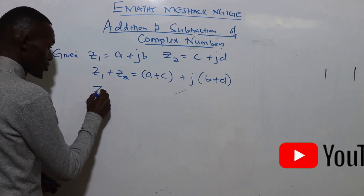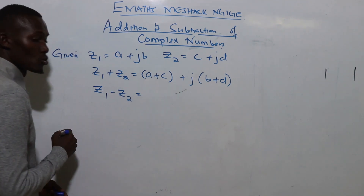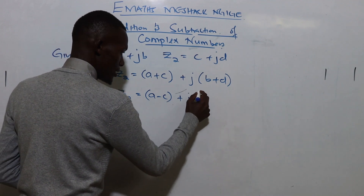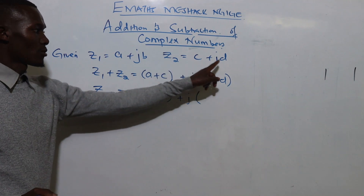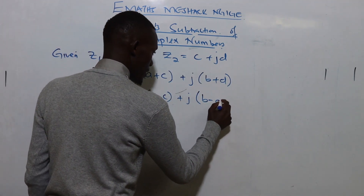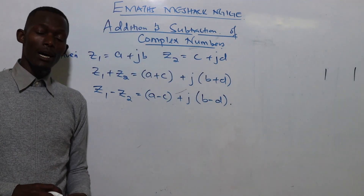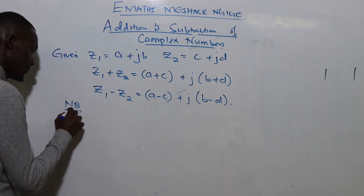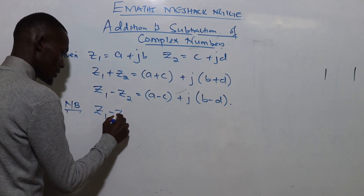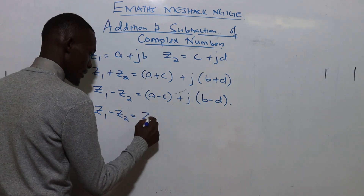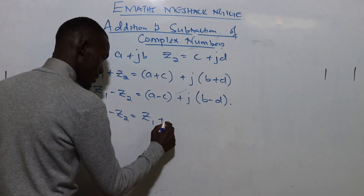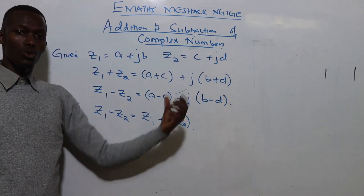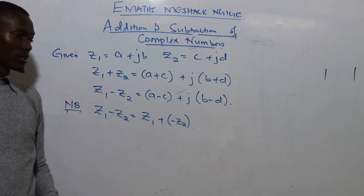Subtraction happens in the same way. z1 minus z2 gives us a minus c for the real parts, then plus j times b minus d for the imaginary part. From the introduction to complex numbers lesson, z1 minus z2 can also be written as z1 plus the negative of z2.